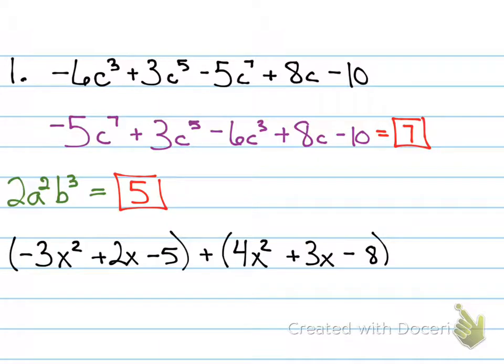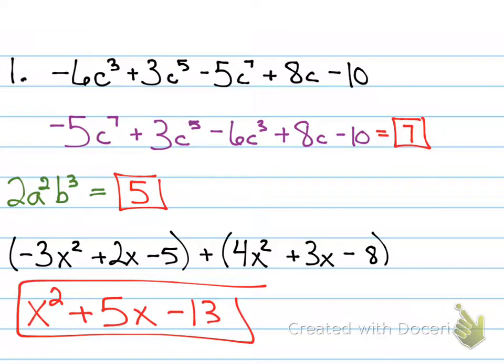So, negative 3x squared plus 4x squared is 1x squared. 2x plus 3x is what? 5x. Negative 5 minus 8 is negative 13. And that's how I simplify it. So, I'm just combining all those like terms together.